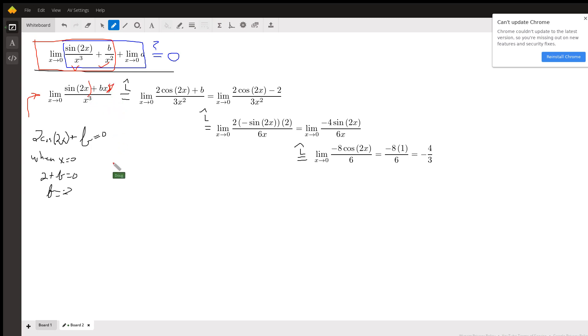There we go. Is 2 cosine 2x for the sine of 2x, and the derivative of bx is b. Derivative of the denominator is 3x squared. If I tried direct substitution again, I can see I've got zero in the denominator. So in order to apply L'Hôpital's rule again, I want a value of b that will make this numerator equal to zero so I'll still have an indeterminate form. So I'm asking the question: if x is zero, what value of b will make this numerator zero? And that turns out to be -2. So I've replaced this b with -2, we get the first part of our answer.